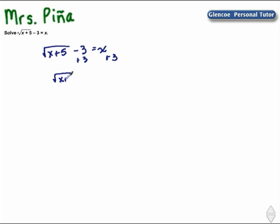On the left, I'm left with the square root of x plus 5 equals x plus 3. Now I need to undo the radical, and how you undo the radical is by squaring both sides. Addition undoes subtraction, multiplication undoes division, squared undoes square root. If you do it to the left side, you have to do it to the right side.